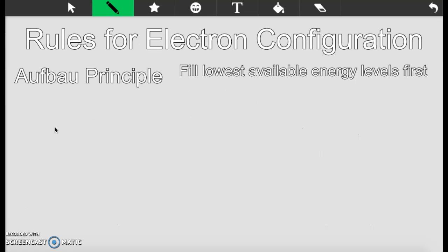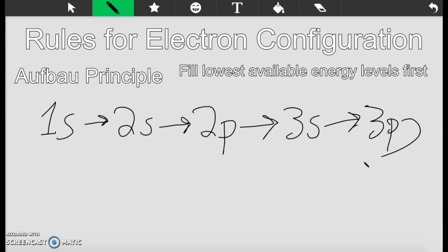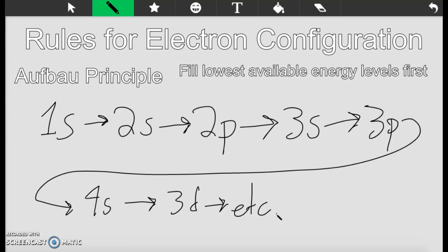The Aufbau Principle, starting with the lowest energy level first, that's on your diagonal rule. You start with the 1s. When that's full, then you go to the 2s. When that's no longer available, you go to the 2p. When that's not available, then you go to the 3s, 3p, 4s, 3d, etc.